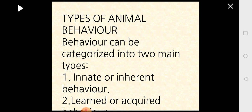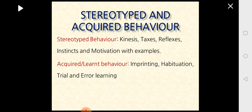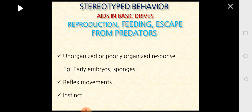Looking at the types of animal behavior, there are two main types. The first is innate or inherent behavior; the second is learned or acquired behavior. Under innate or inherent behavior, also called stereotype behavior, we will learn kinesis, taxes, reflexes, instincts, and motivation. Under acquired or learned behavior, we will learn imprinting, habituation, trial and error learning.